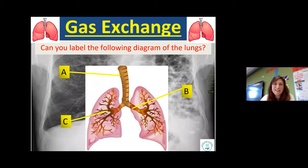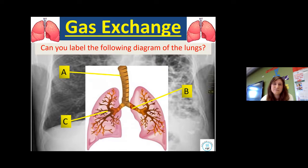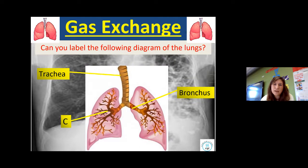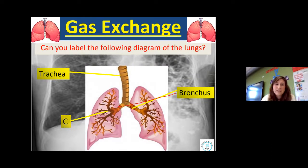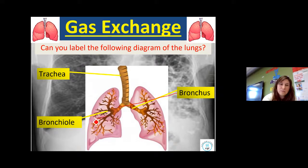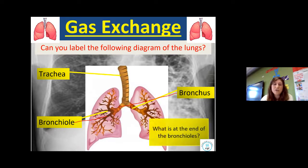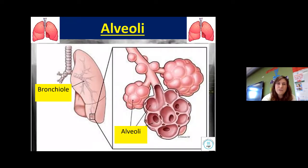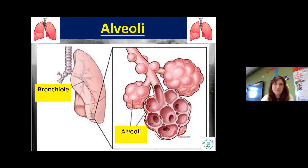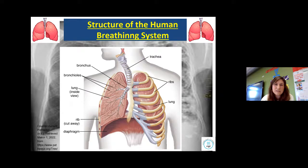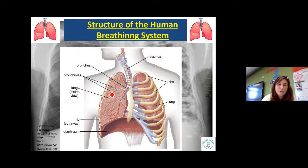I'm going to start off with giving you 10 seconds to see if you can label the following diagram. Hopefully you remember: A is the trachea, B is the bronchus or bronchi if labelling both, and C is the bronchiole or bronchioles if labelling more than one. At the end of each bronchiole is the alveolus, or alveoli in the plural. Here you can see the structure of the human breathing system — the trachea, the bronchus, the bronchioles, and into the alveoli.